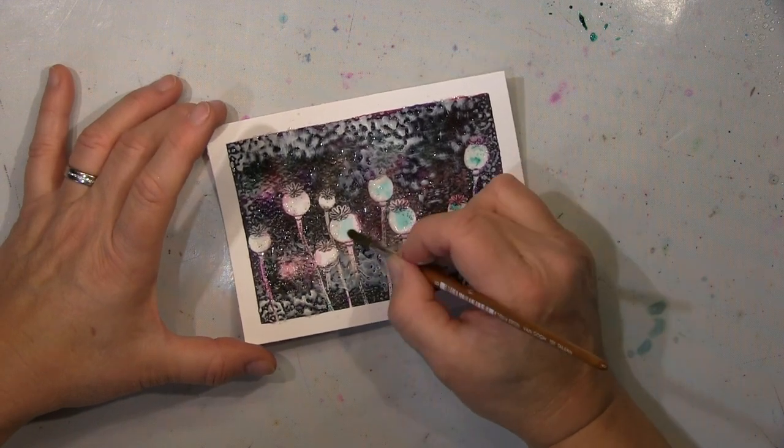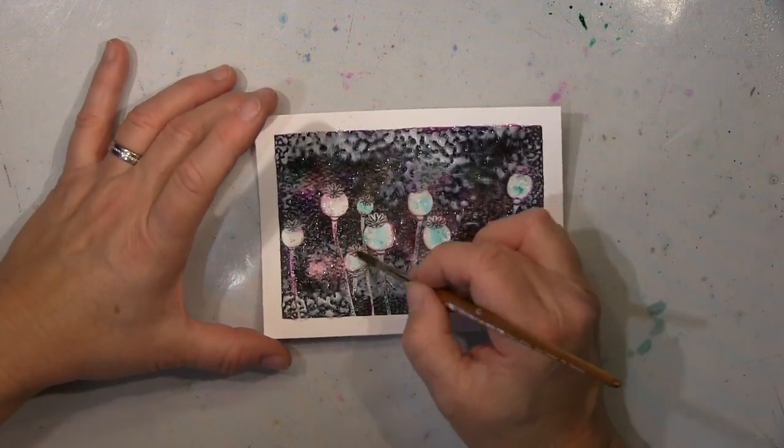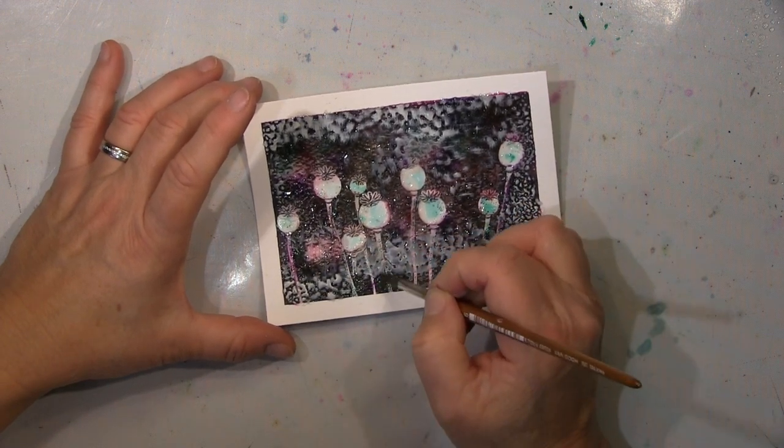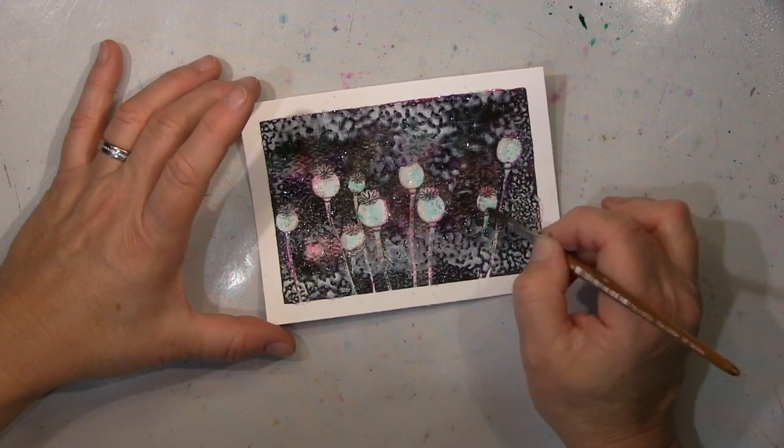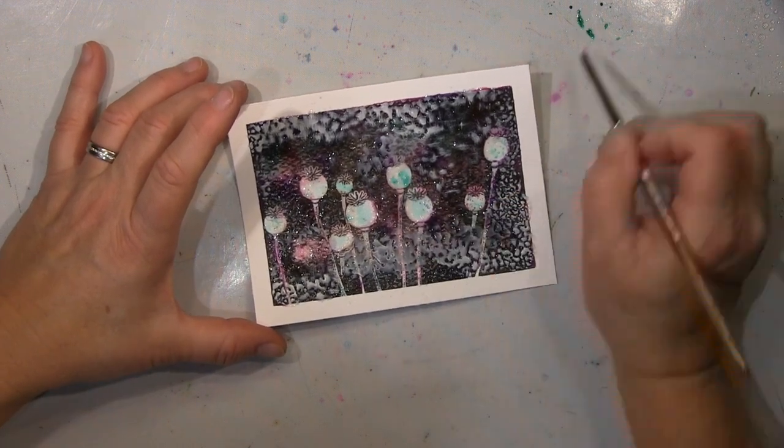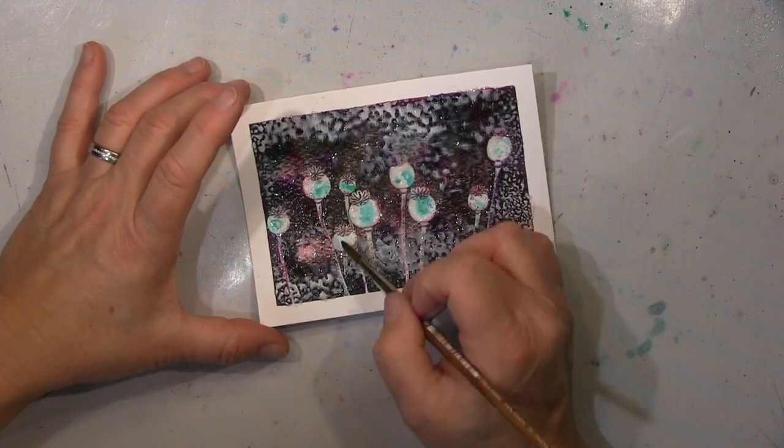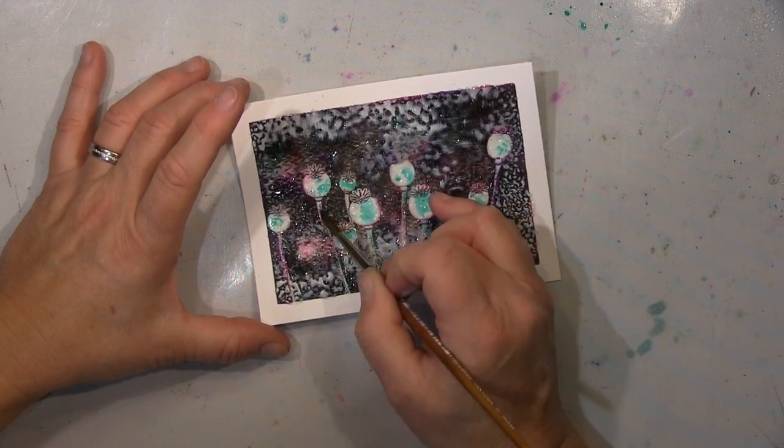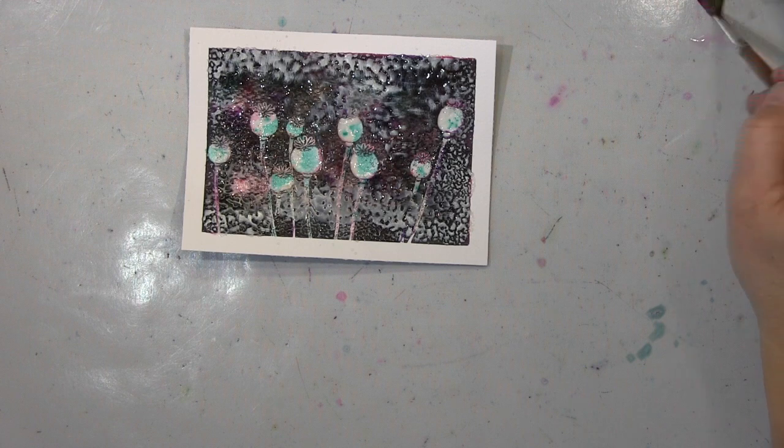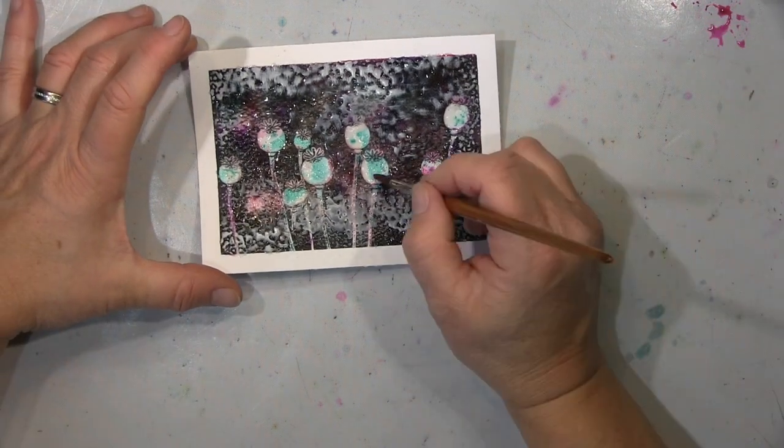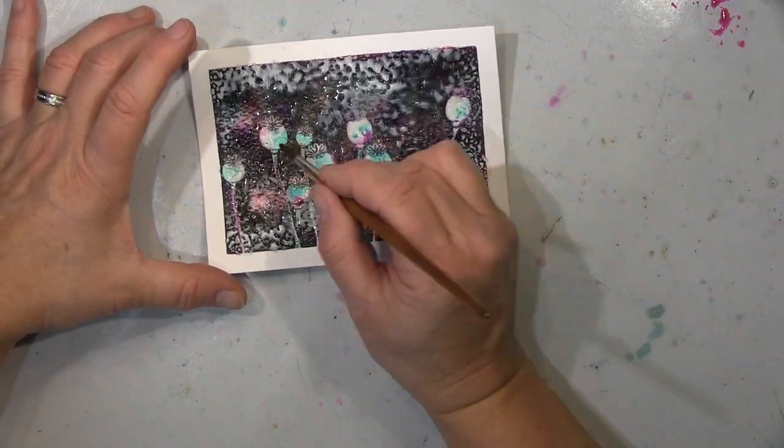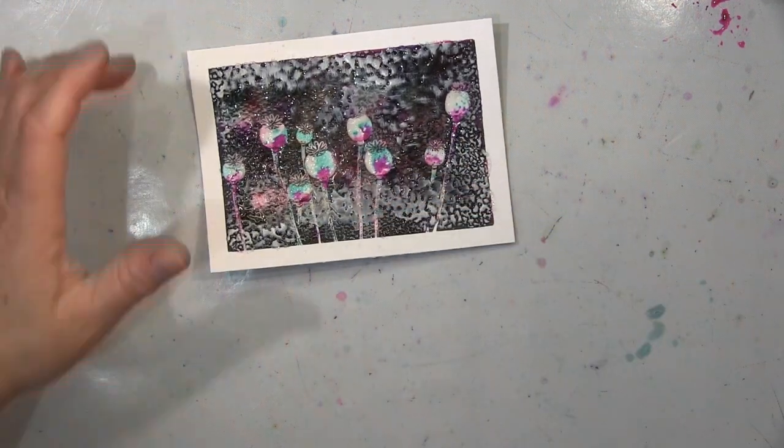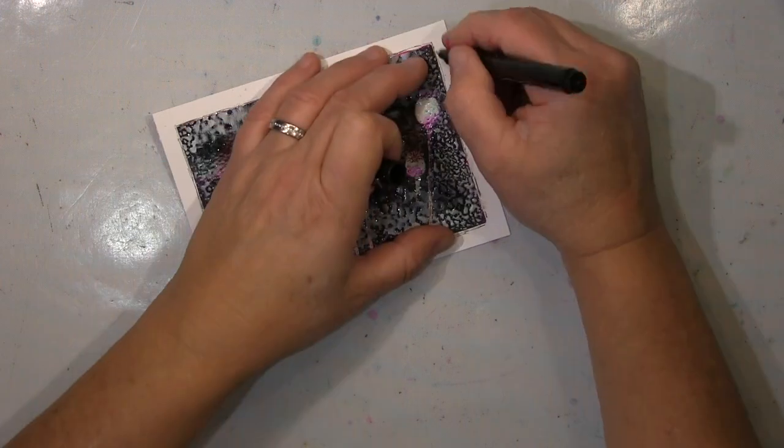Ich habe mich dann entschieden, ich habe ja jetzt nicht alles komplett mit dem Enamel oder mit dem Embossingpulver bedeckt. Da sind also immer noch Öffnungen. Das habe ich also schon extra gemacht, weil ich da schon wusste, da ist mir nicht genug Farbe drauf. Ich möchte doch ein bisschen mehr, dass es durchscheint und habe dann erst mit Wasser schön gearbeitet und dann gehe ich mit meinen Sparkles hier nochmal rein und lasse dann die Farbe so richtig schön einsaugen.